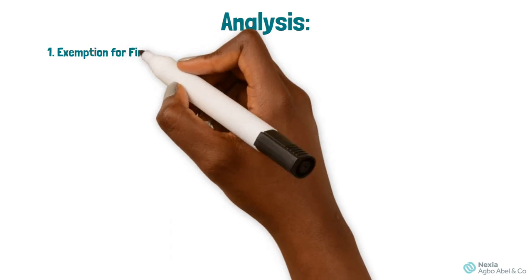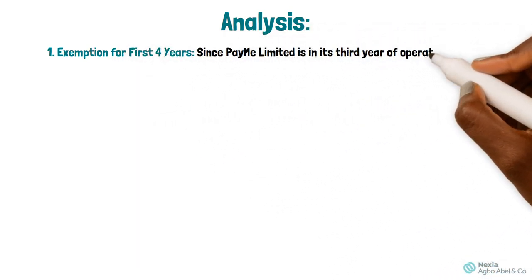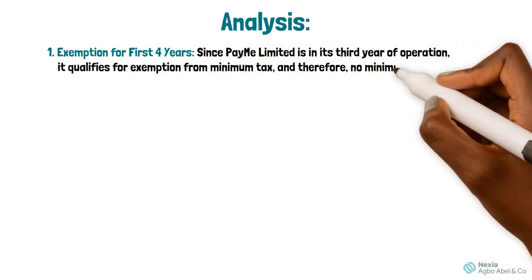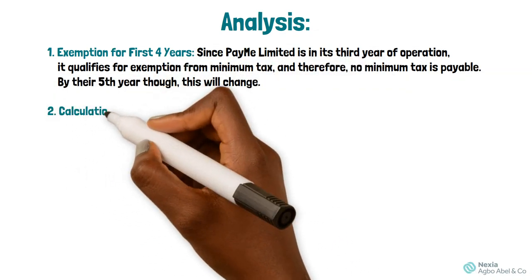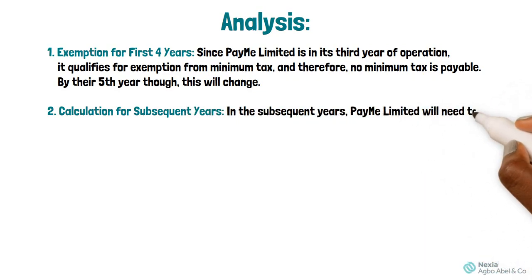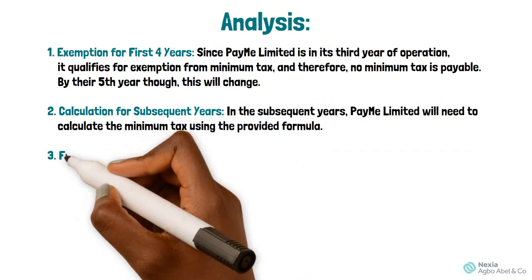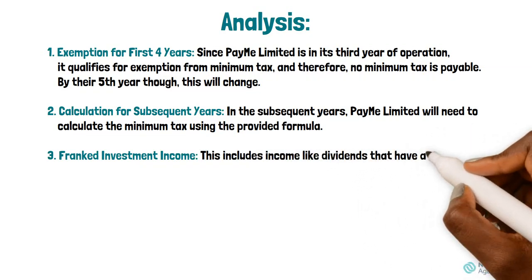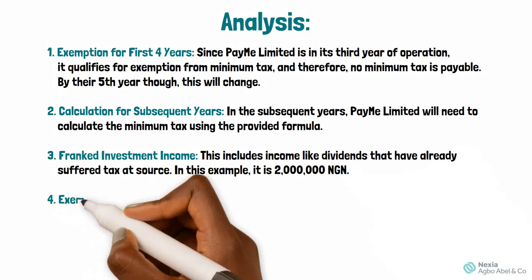Analysis point one: exemption for first four years. Since Pay Me Limited is in its third year of operation, it qualifies for exemption from minimum tax, and therefore no minimum tax is payable. By their fifth year, this will change. Point two: in subsequent years, Pay Me Limited will need to calculate the minimum tax using the provided formula. Point three: franked investment income includes income like dividends that have already suffered tax at source — in this example, it is 2 million naira.